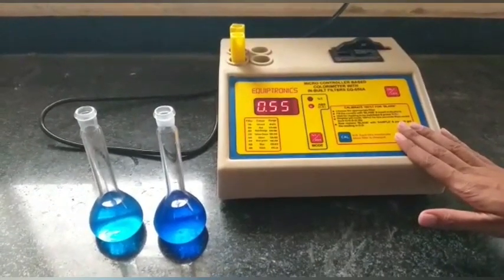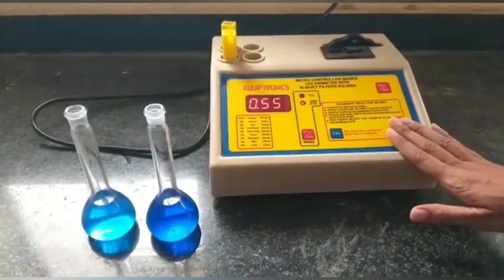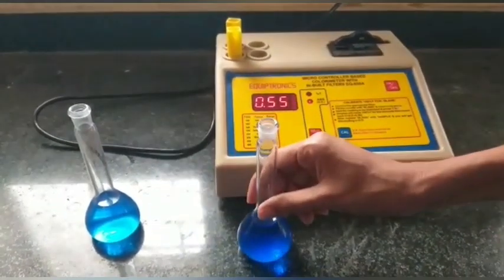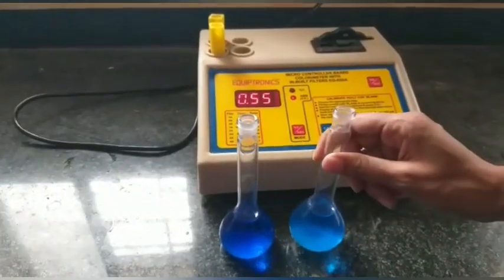In colorimetry, we have the principle Lambert Beer's law, and this principle shows the color of the solution and absorbance. From this color solution we get the absorbance and transmittance readings.